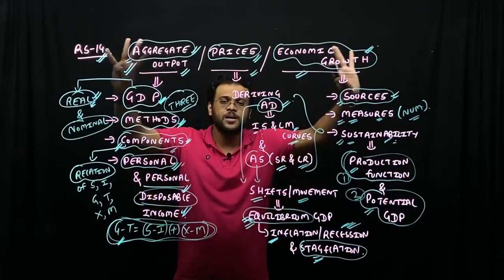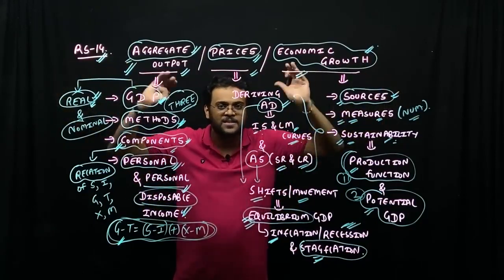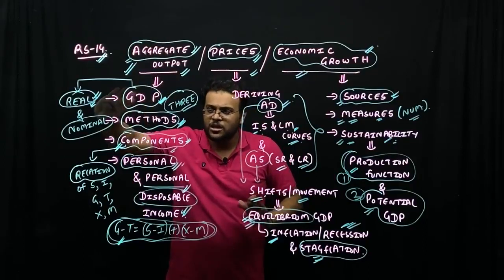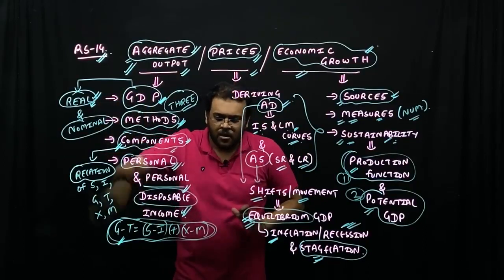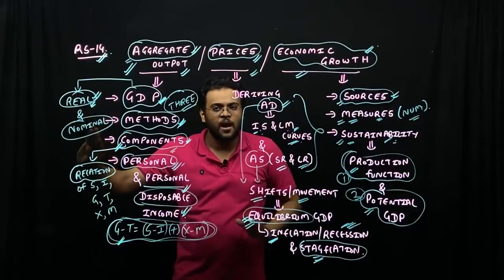So the whole analysis is going on. The whole chapter is divided. To summarize, we have aggregate output, GDP, methods, components, kinds of income, fundamental relationships, and what is real and nominal.